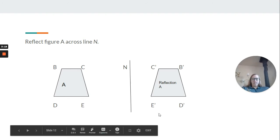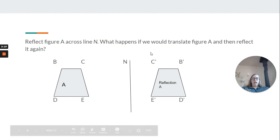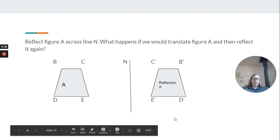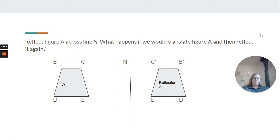E and E on the inside, and then we have B and B and D and D on the inside. So what happens if we would translate figure A and then reflect it again? Well, if we translate it along N, that means we're moving it, and then we reflect it, it's not going to be in the exact same spot that this one started. Because we moved it first.